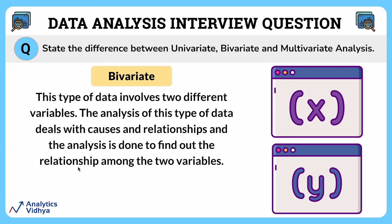Bivariate is like looking at two things together. In bivariate data, you are interested in how two different things are related to each other. For example, if you are trying to figure out if there's a connection between temperature and ice cream sales, that's bivariate data.